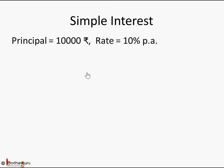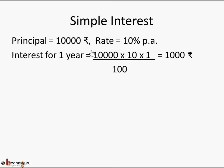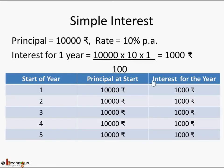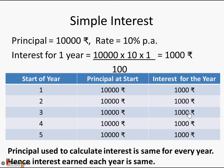In case of simple interest, the formula is PRT by 100, and the key point to remember is the principal remains the same for every year. If you have 10,000 rupees as a deposit at 10% per annum with simple interest, you are going to get 1,000 rupees in year one, 1,000 in year two, and so forth. At the end of five years you get 5,000 rupees.